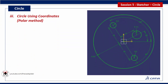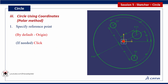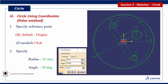Specify horizontal and vertical value, then specify radius value. Second method is the polar method. First specify reference point. Then specify radius and angle value. Next specify radius for the circle.